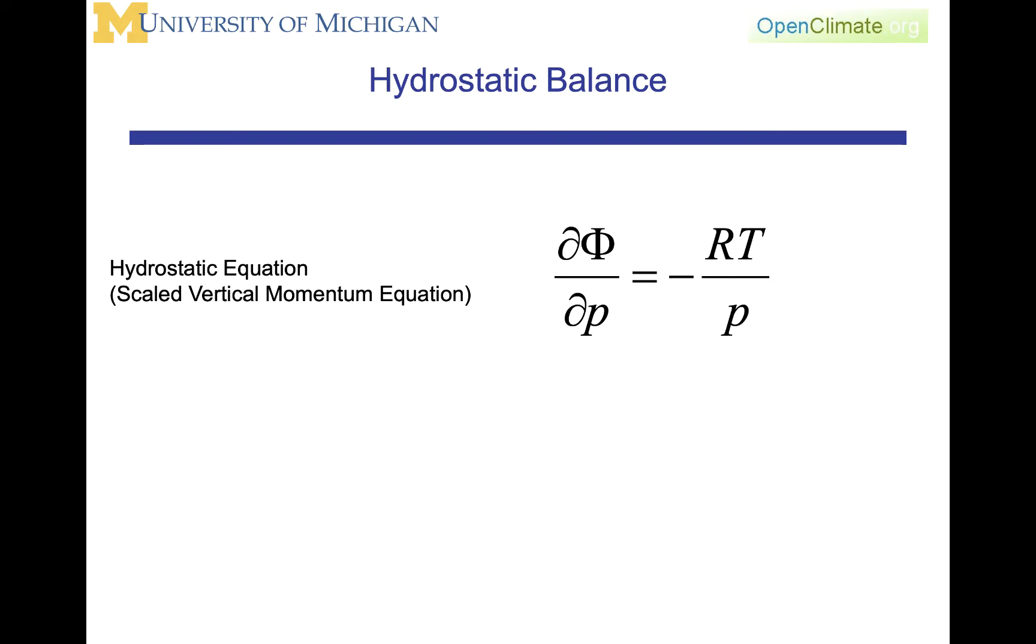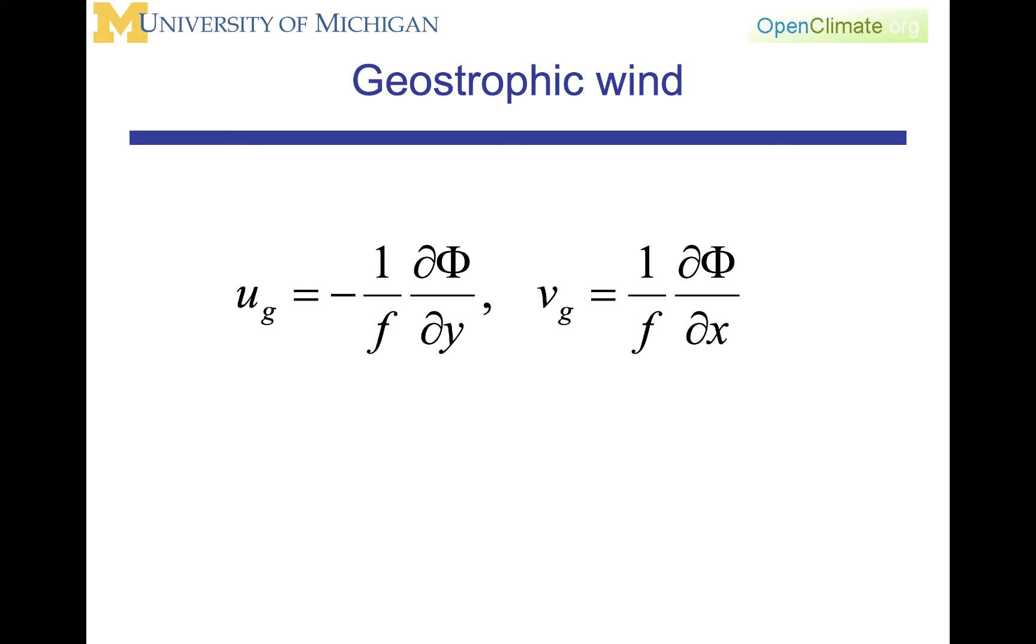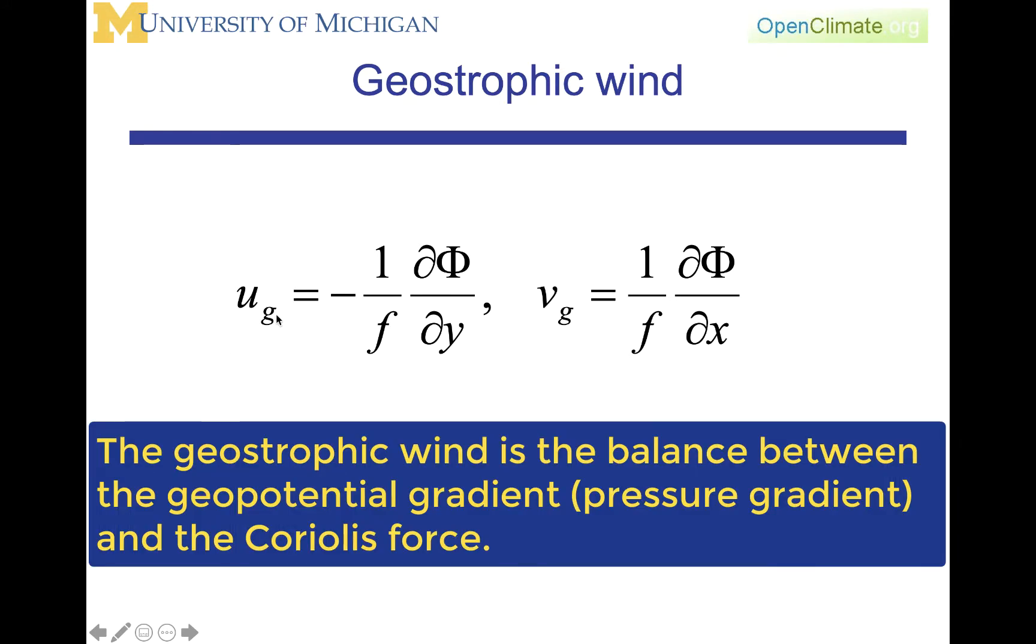We will be starting from one of the balances that come from these scaled equations, namely the geostrophic wind. The geostrophic wind is given here, and it's represented by u sub g equals minus one over f d phi dy, and v sub g equals one over f d phi dx.